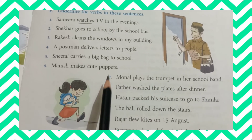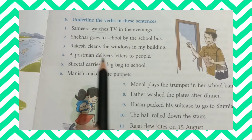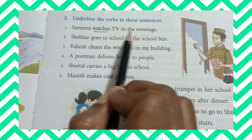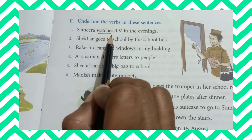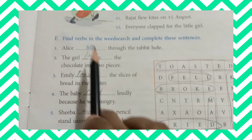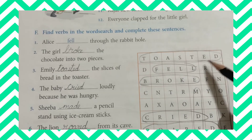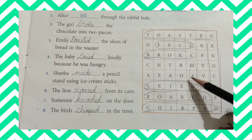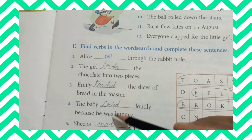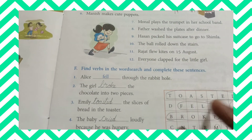Children, look here. They have given some sentences — what you have to do is underline the verbs in these sentences. For example, Samira watches TV in the evening — the verb is watches. Read the sentence and underline the verbs. And this is: find verbs in the word search and complete these sentences. They have given an alphabetical box — you have to circle the word, pick it up, and write it in the given blanks. This is your homework today. I will be posting the answers in the evening. Bye-bye children, that's all for today's class.